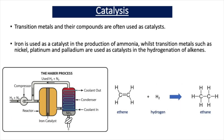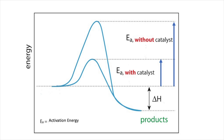Transition metals also find uses as catalysts. Both transition metals and their compounds have catalytic properties — they speed up chemical reactions. Iron is used as a catalyst in the production of ammonia, whilst transition metals such as nickel, platinum and palladium are used as catalysts in the hydrogenation of alkenes. That reaction is particularly important in the margarine industry, where unsaturated oils are converted to saturated fat. In later videos we'll look at the chemical properties of transition metals and focus in more detail on their catalytic properties.